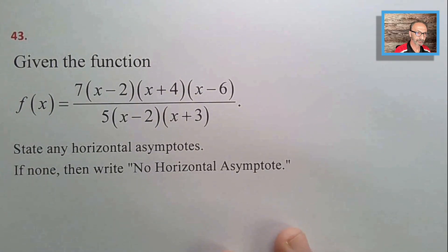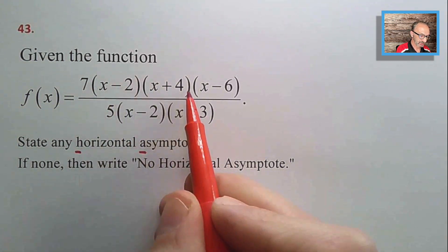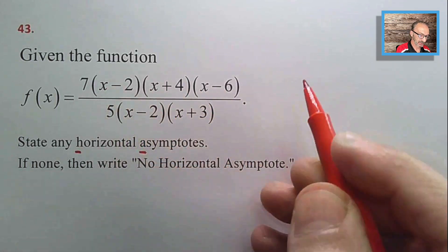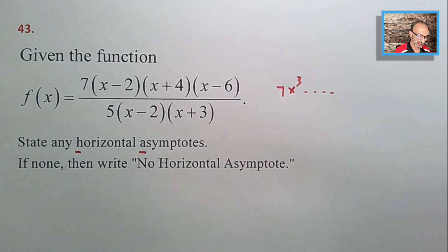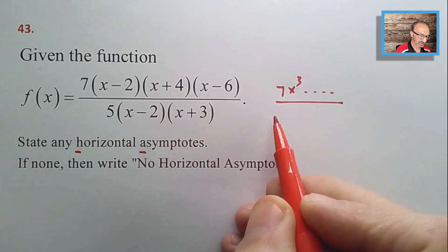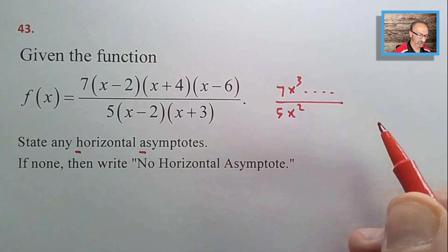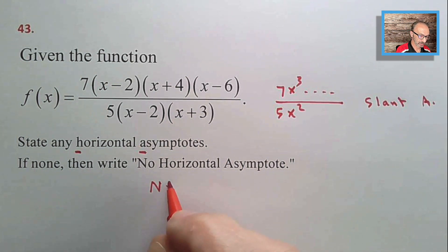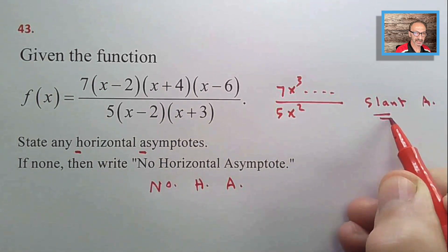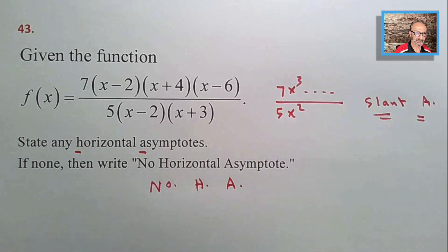Number forty-two: state any vertical asymptotes. The factor that does not cancel gives a vertical asymptote at x = −3. Number forty-three: state any horizontal asymptotes. The numerator has degree 3 (leading term 7x³) and denominator has degree 2 (leading term 5x²). Since the numerator degree exceeds the denominator degree by one, there is a slant asymptote — no horizontal asymptote.